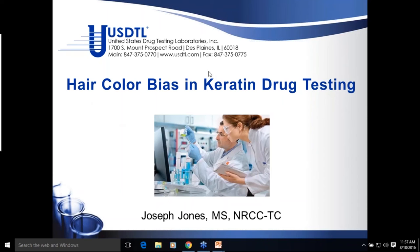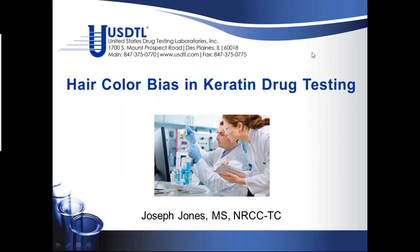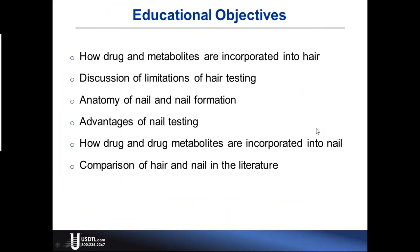Today we're going to talk about hair color bias and keratinized matrices for drug testing. We're going to talk about how drugs and metabolites are incorporated into hair, discuss the limitations of hair testing, the anatomy of nail and nail formation, the advantages of nail testing, how drug and drug metabolites are incorporated into nail, and then we'll have a few examples of comparisons of hair and nail in the literature as they relate to hair color.